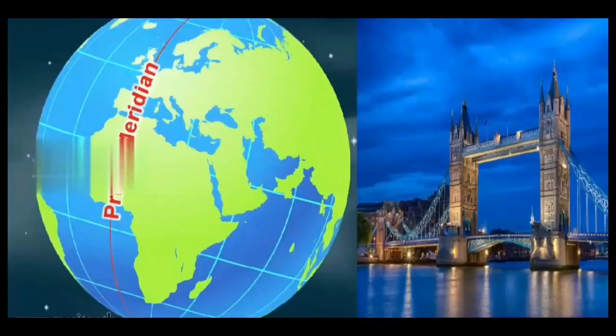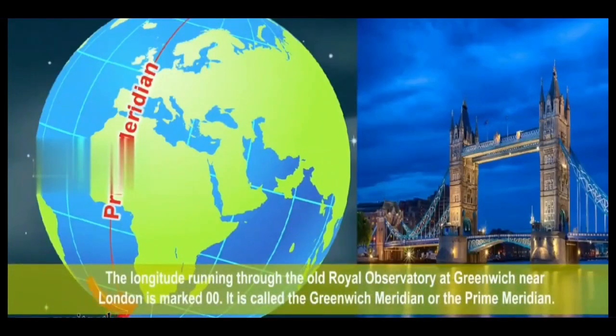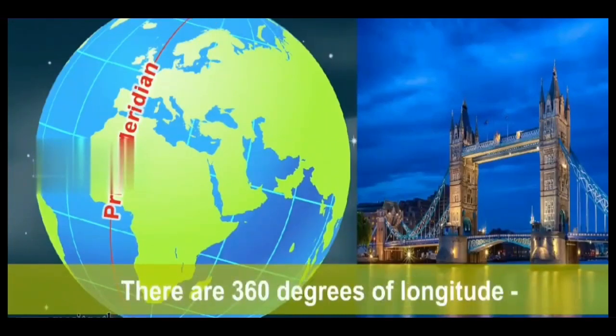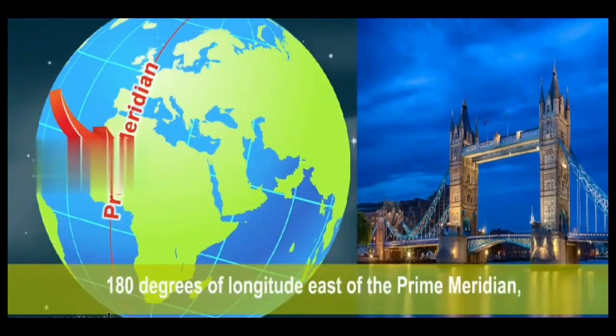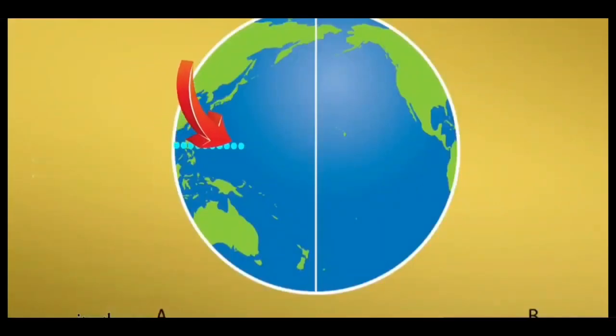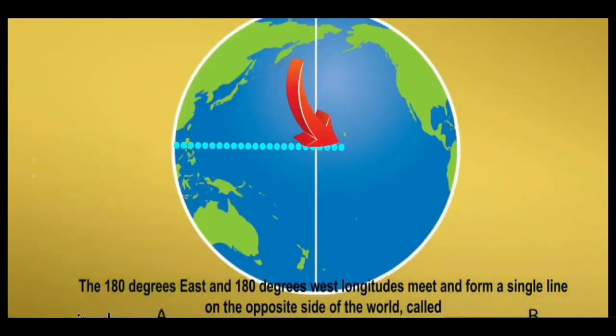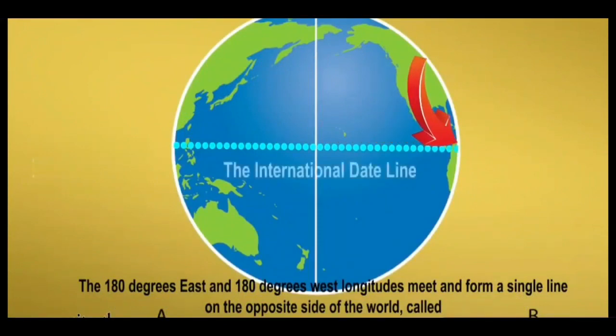Features. The longitude running through the Old Royal Observatory at Greenwich near London is marked 0.00. It is called the Greenwich Meridian or the Prime Meridian. There are 360 degrees of longitudes, 180 degrees of longitude east of the Prime Meridian. And the 180 degrees east and 180 degrees west longitudes meet and form a single line on the opposite sides of the world. The international date line is called the international date line.